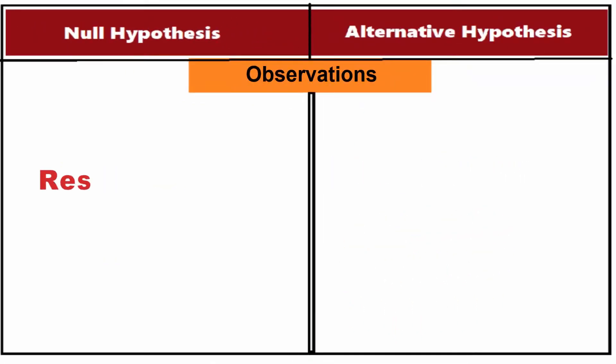In null hypothesis, the observations are the outcome of chance, whereas in the case of the alternative hypothesis, the observations are an outcome of real effect.